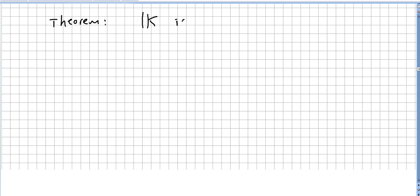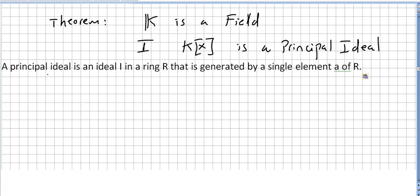Okay. Let's say we have K where K is a field. If K is a field, then every ideal I in the polynomial ring K[X] is a principal ideal. So if K is a field and I is an ideal, then the polynomial ring K[X] is a principal ideal. Please don't forget what the principal ideal is. A principal ideal is an ideal I in the ring R that is generated by a single element a of R.